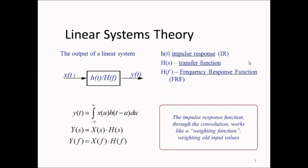If you understand convolution, you will realize that the impulse response function acts as a weighting function for old input values. The impulse response describes how much of old input values will be taken into account to produce the current output value.